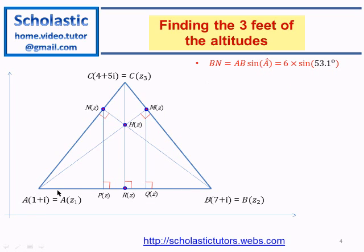AB is equal to 6 because this is from 1+i to 7+i. 6 sin A equals BN, and when simplifying we can find BN. AN is the distance equal to square root of AB squared minus BN squared, from the Pythagorean theorem. So AB is 6, BN comes from this equation, and when you simplify we get the value of AN equal to 3.605.